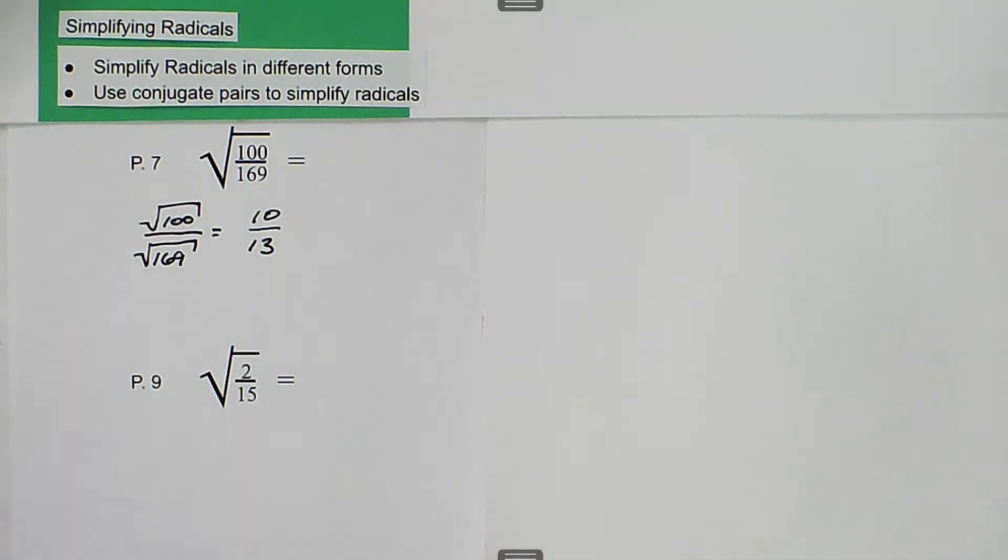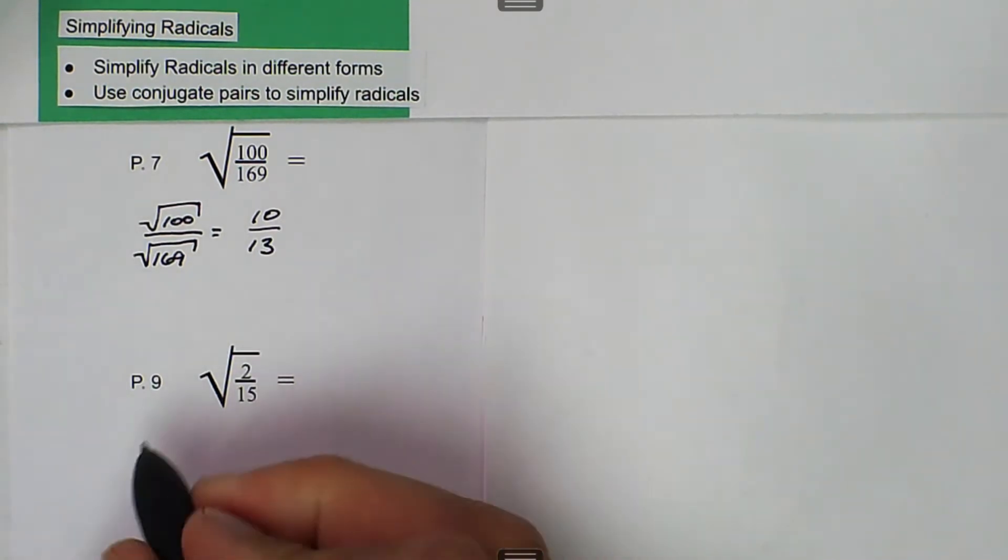Down here we have the square root of 2 divided by 15, and the same thing. We can split that up, so we can say the square root of 2 divided by the square root of 15.